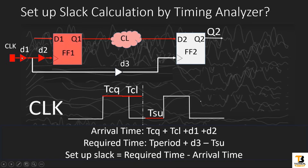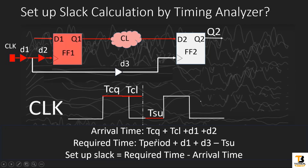Our reference point is this clock IO pad. The new required time is T-period minus T-setup, as already discussed, but now we also need to add D1 plus D3 delay — the destination clock path delay. So basically, source clock path delay is added in the arrival time, and destination clock path delay is added in the required time.